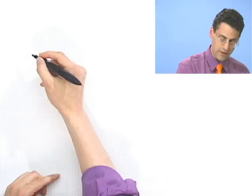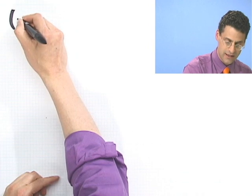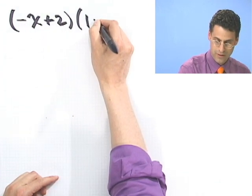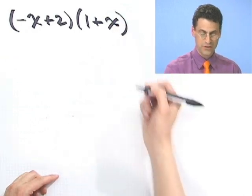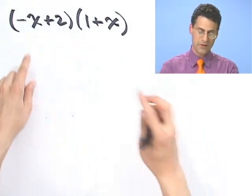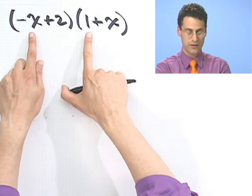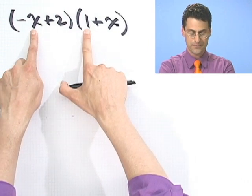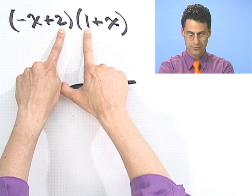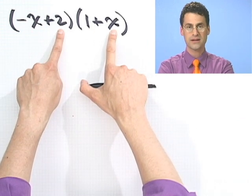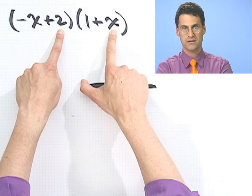Now, of course, if you have something simple like this, minus x plus 2, times 1 plus x, you could just use the FOIL method. And if you do the FOIL method, I'll do it for you really fast. I'll just talk through the FOIL method. So this is going to be a talking FOIL. I see a minus x squared plus 2x minus x plus 2. And you combine that, and you get the answer.